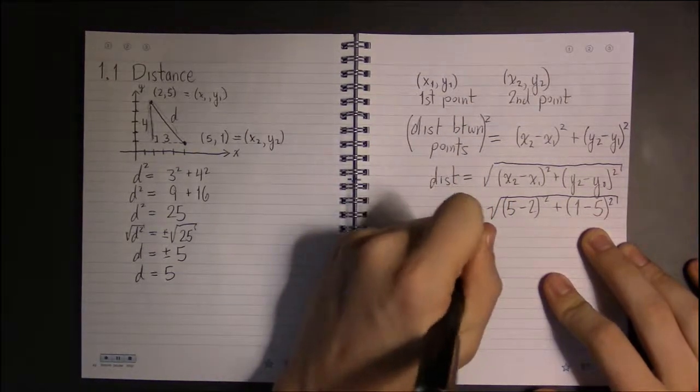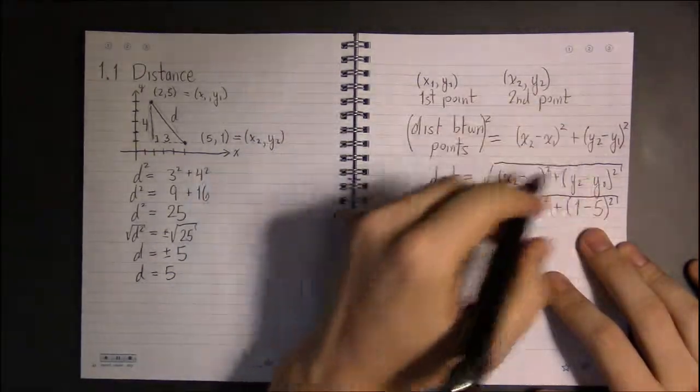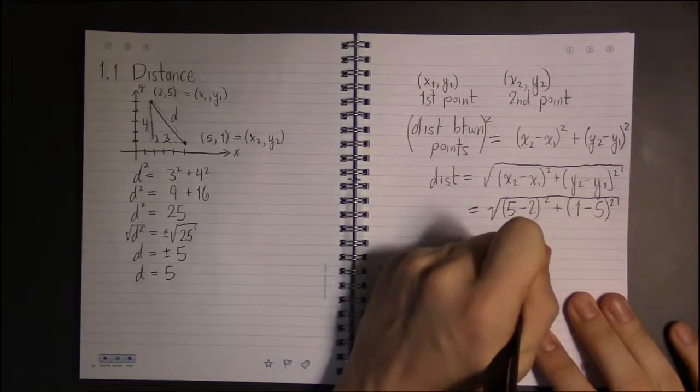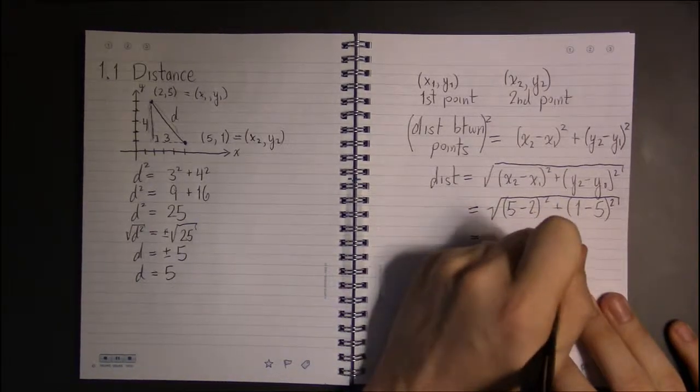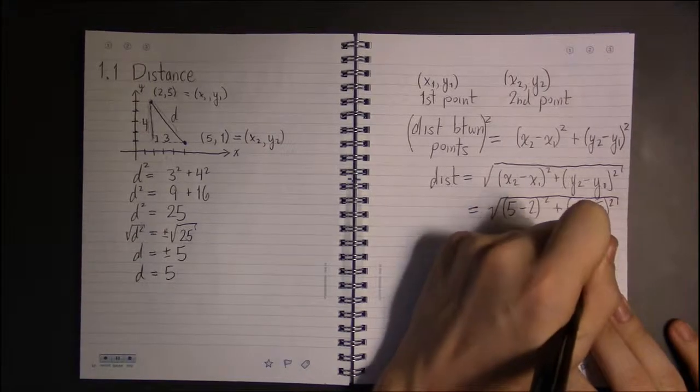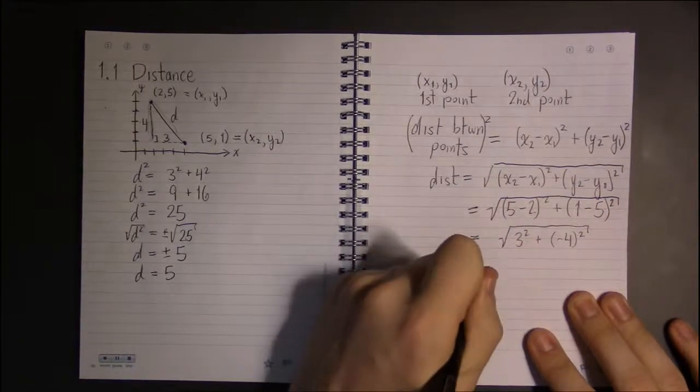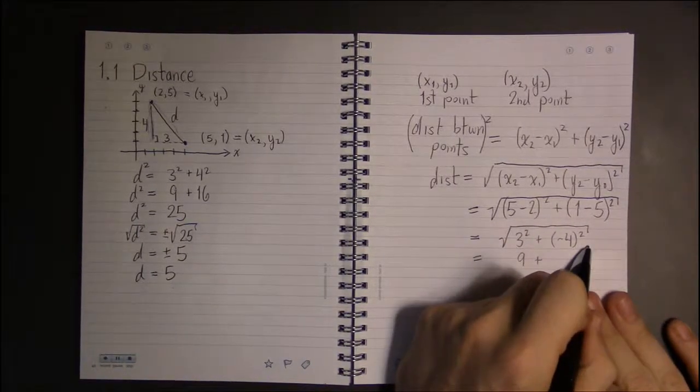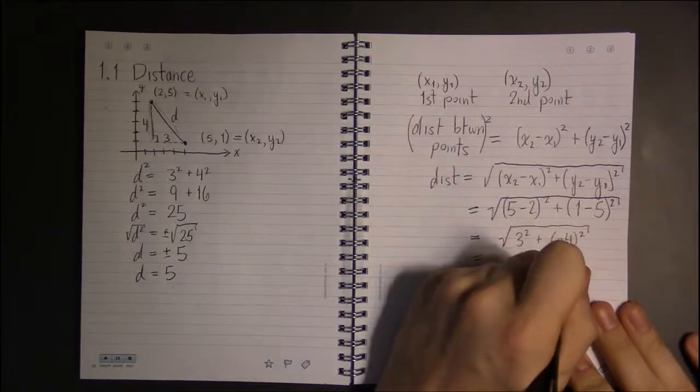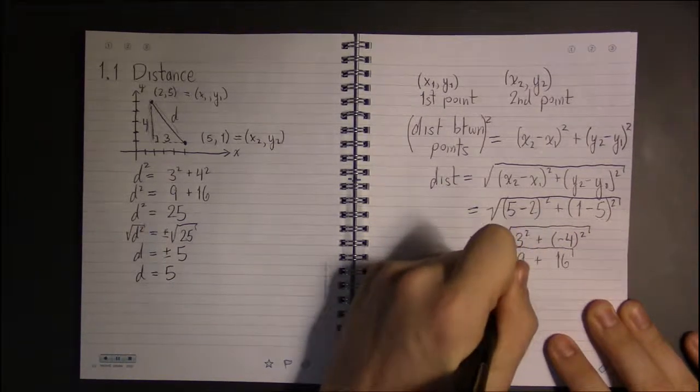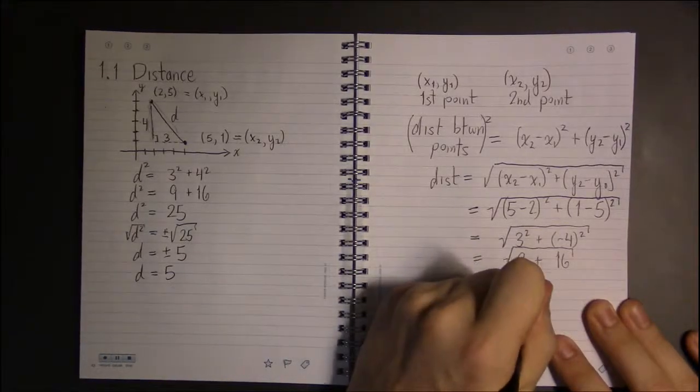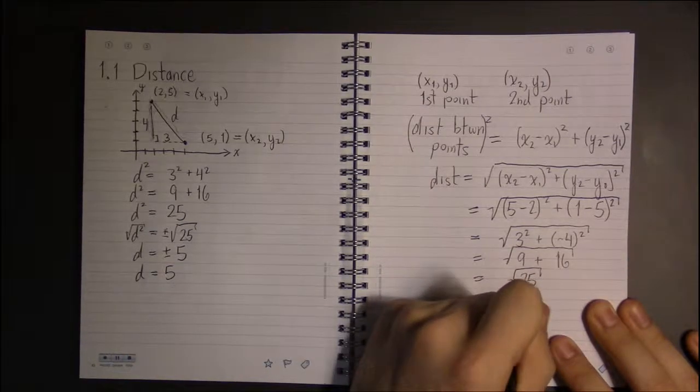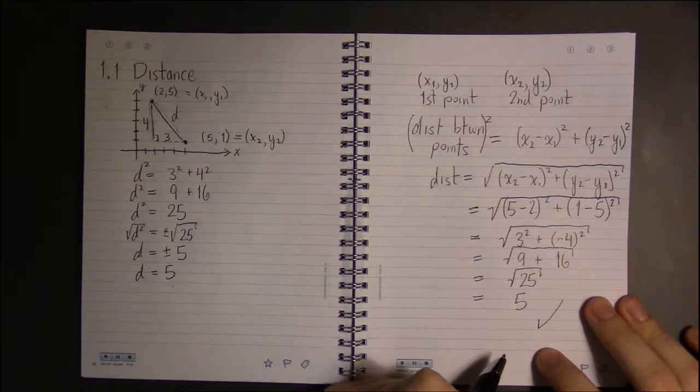And when we're done with this computation, we should get 5 if this idea of ours works. 5 minus 2 is 3, 1 minus 5 is minus 4. 3 squared is 9, minus 4 squared, minus 4 times minus 4 is plus 16. 9 plus 16 is 25, and square root of 25 is 5. Everything checks out.